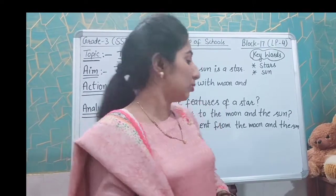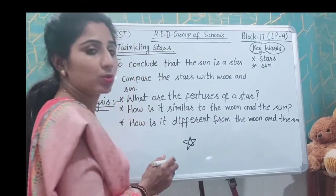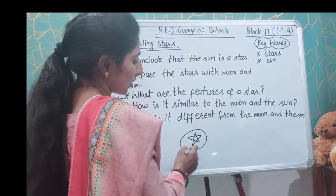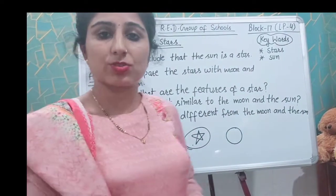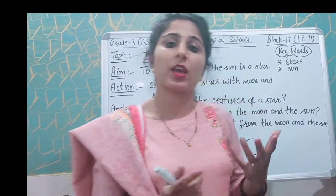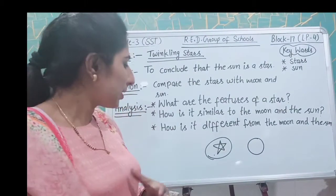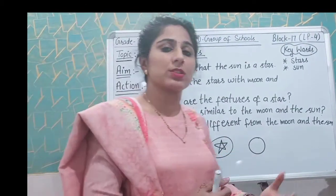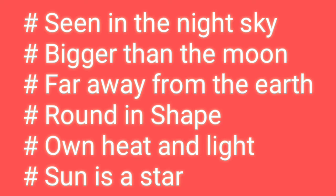Most stars are round in shape — not the pointed shape we usually draw, but actually round. You can see on the screen the features of a star: stars can be seen only in the night sky, they are bigger than the moon, far away from the earth, round in shape, they own heat and light, and the sun is also a star.